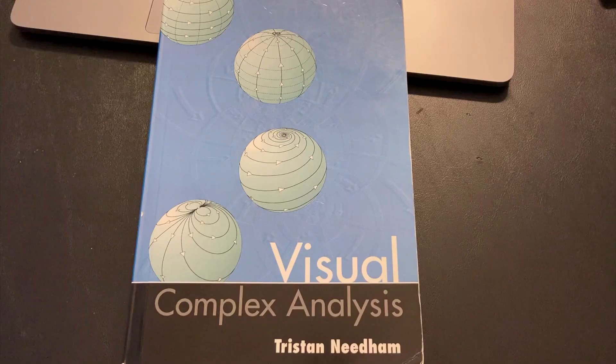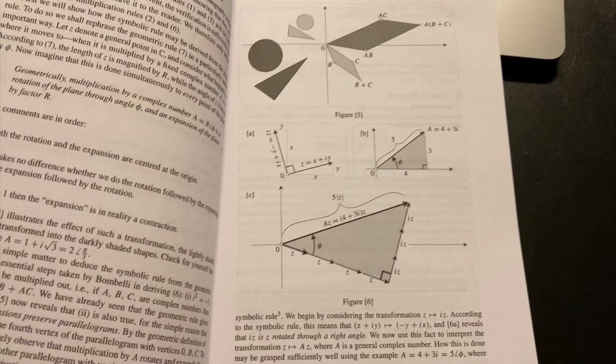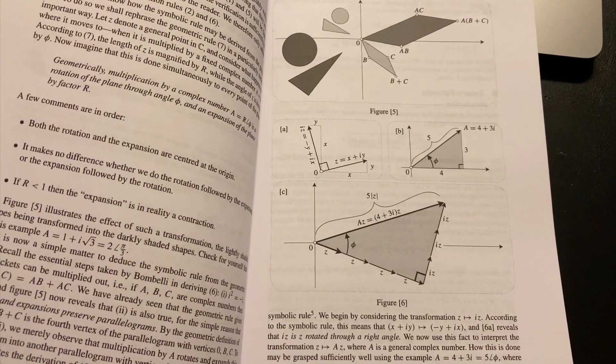So now let's get into looking at how Tristan Needham illustrates the beauty of complex numbers in his book, Visual Complex Analysis. One of the most important things to do early in the book is to illustrate the equivalence of the algebraic and geometric interpretations of multiplication. That's done through examples and pictures like you see here.